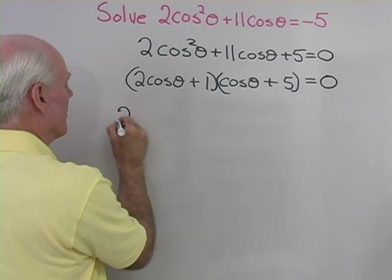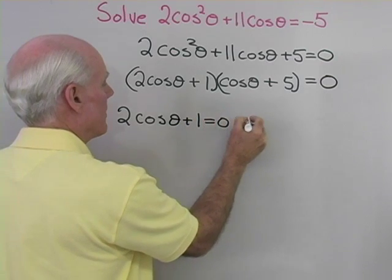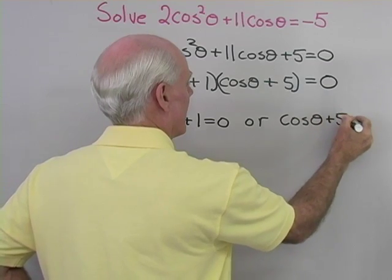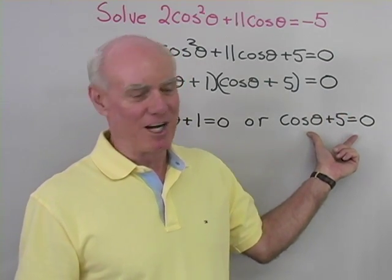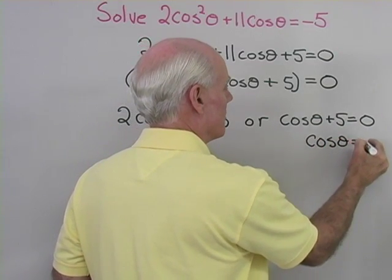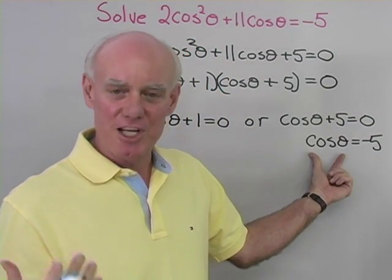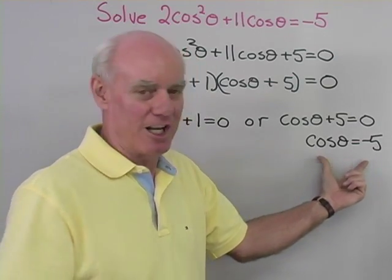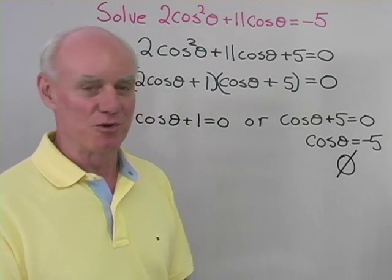Setting each factor to 0: 2 cosine theta plus 1 equals 0, or cosine theta plus 5 equals 0. For the second equation, cosine theta equals negative 5 — that can't happen, since cosine theta must always be between negative 1 and positive 1. So there are no solutions from that factor; the solution set for that part is the empty set.